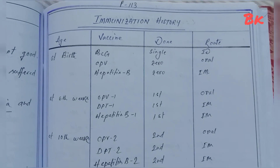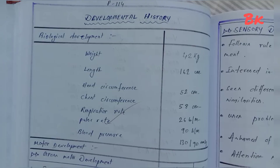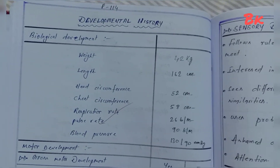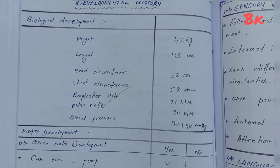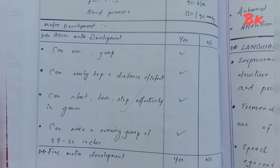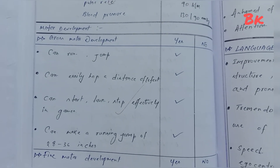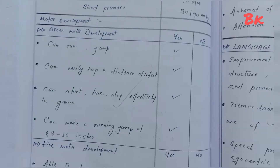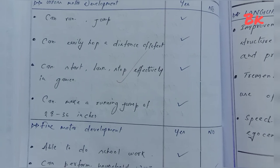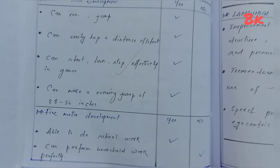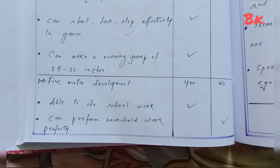Immunization history is noted. Developmental history — biological development: weight, length, head circumference, chest circumference, respiratory rate, pulse rate, blood pressure. Gross motor development: can run and jump, can easily hop a distance of 16 feet, can start, turn and stop effectively in games, and can make a running jump of 28 to 36 inches. Fine motor development: able to do school work and perform household work perfectly.